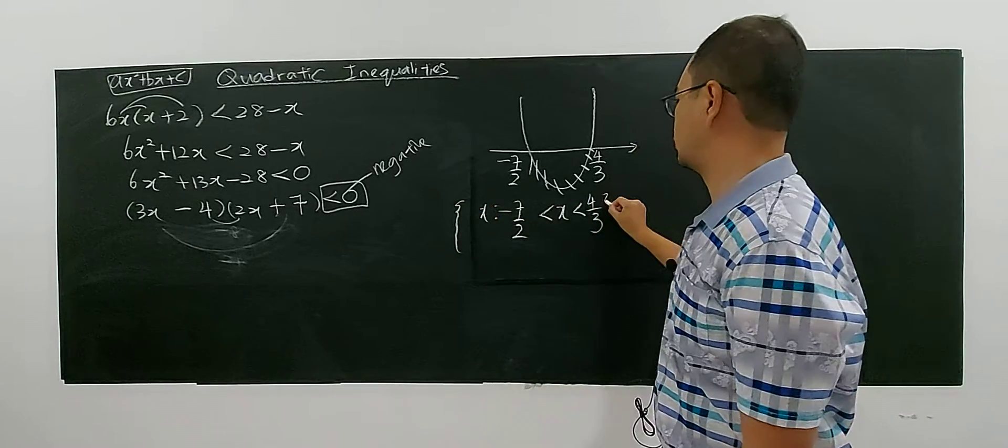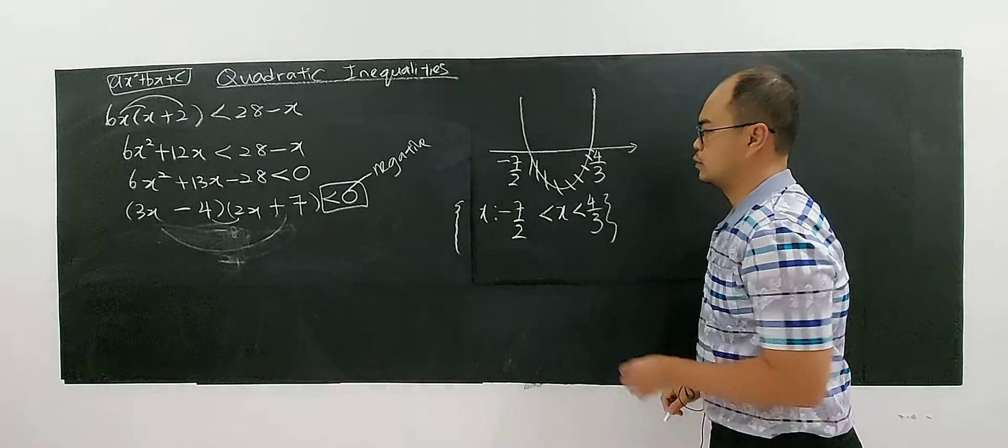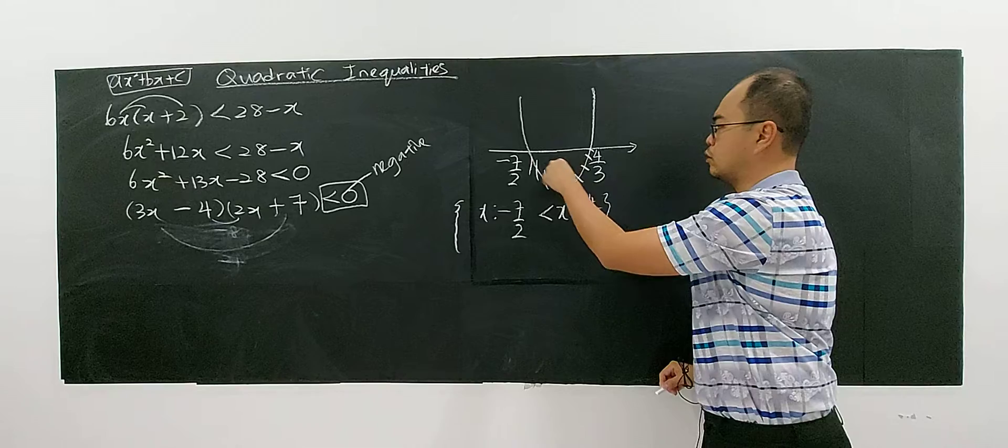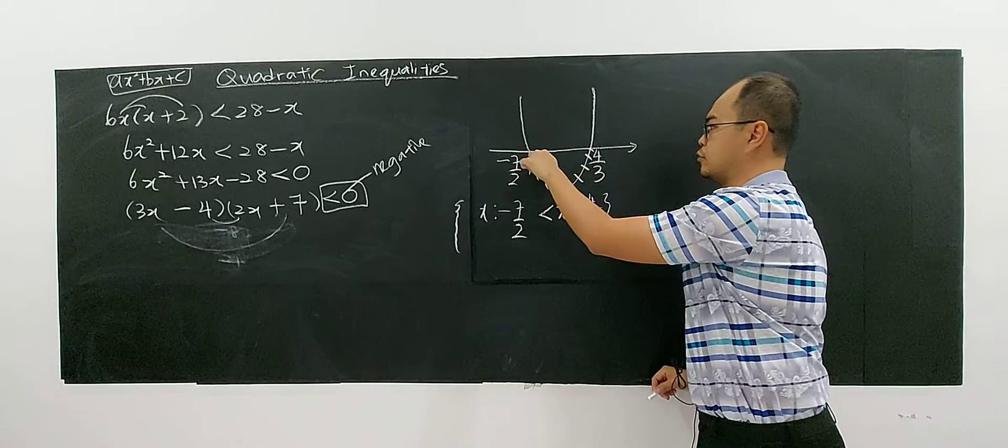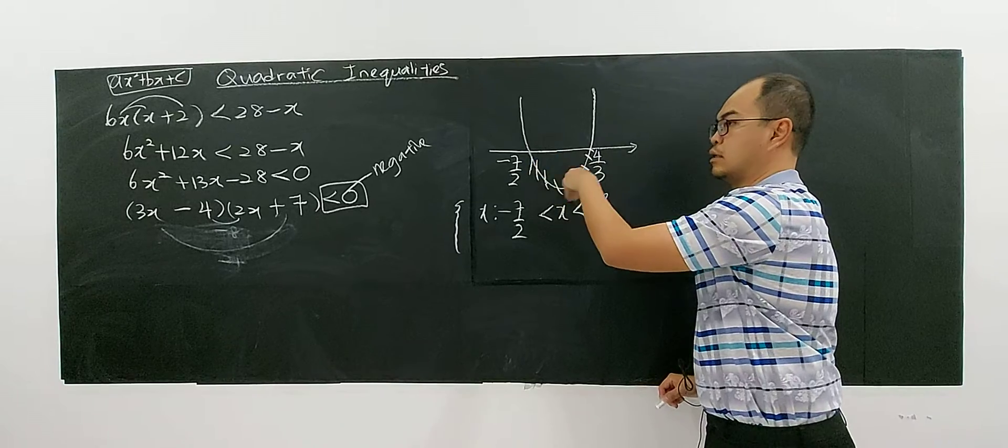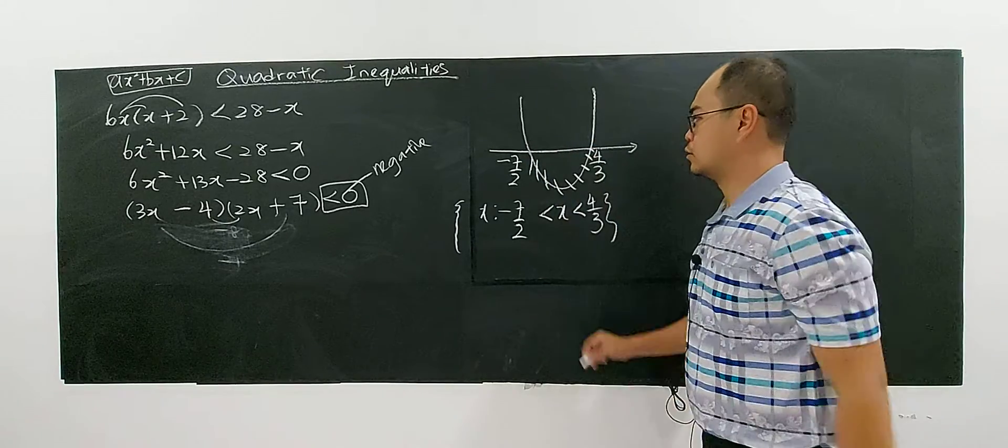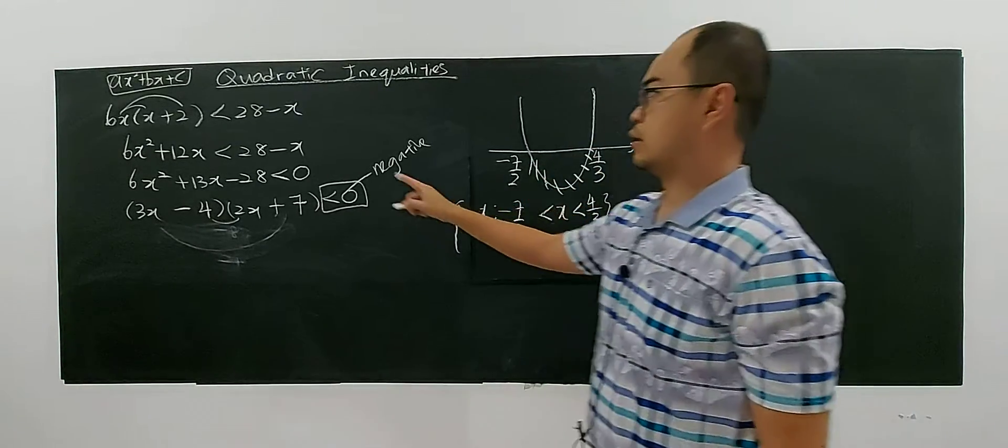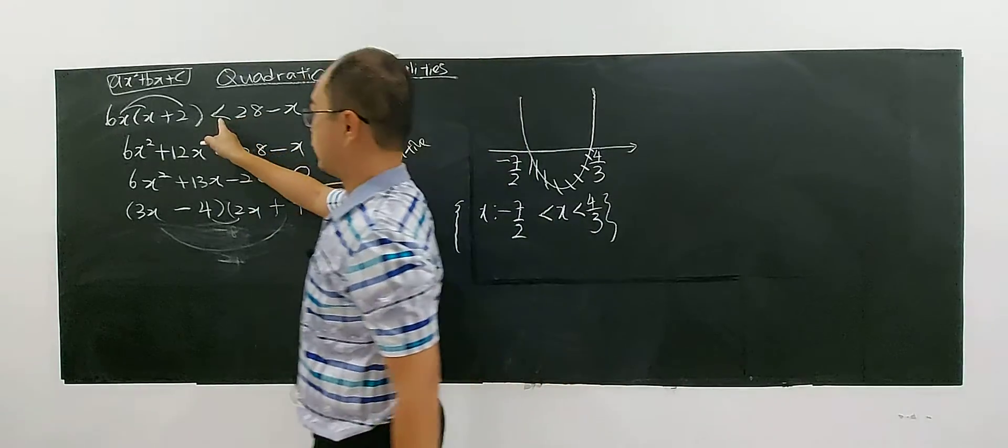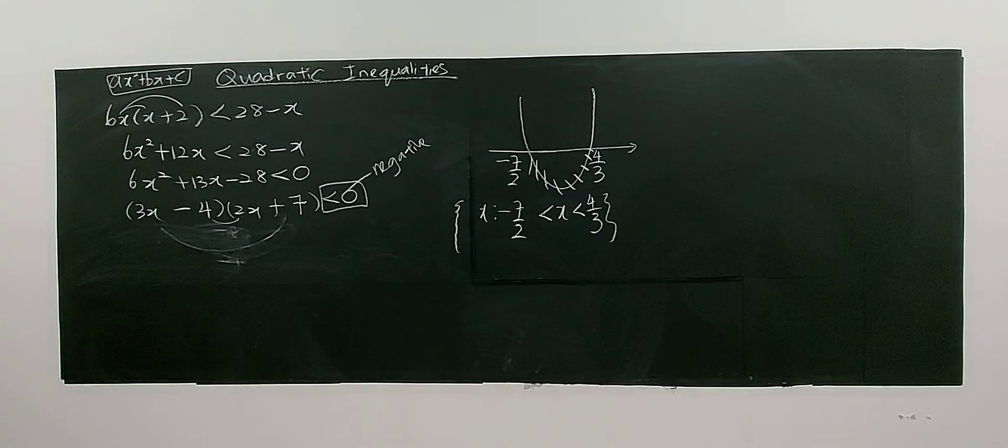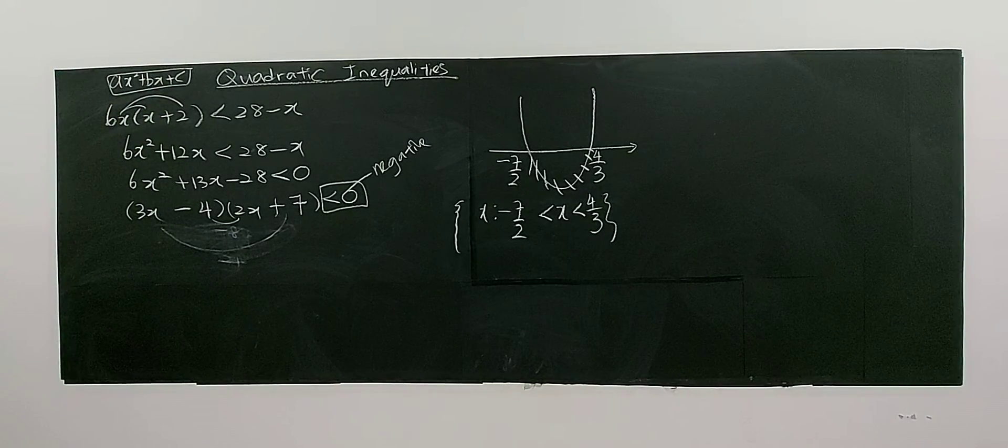This is your solution for this problem. Because the y value for this graph here is negative, it's below the x-axis. So this is the region where the solution satisfies this inequality. Very easy. Hope you understand.